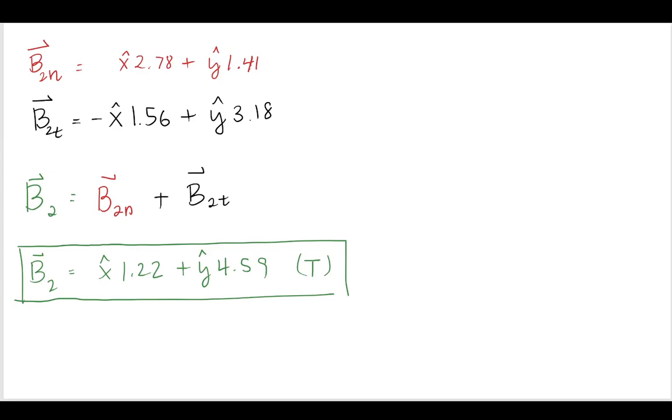And again, we cannot forget that any vector we can write as that sum of the normal plus the tangent, right? So we can sum these things together. So this is the first part from the normal, the normal boundary conditions. This is the second part from the tangent boundary conditions. We can sum those together to arrive at an expression for B2.